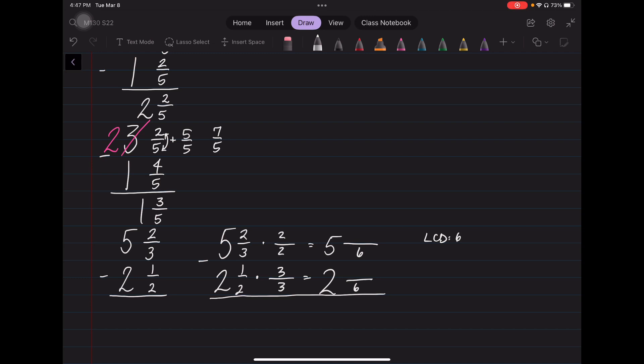I just carried over the whole number. I'm not really working with multiplying those or making them improper or anything. I'm just working with the fractions at this point. 2 times 2 is 4. 1 times 3 is 3. This turns into the problem of 5 and 4 sixths minus 2 and 3 sixths.